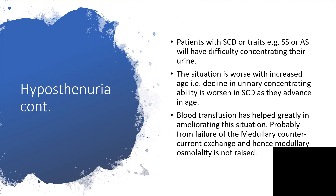Hyposthenuria is the inability to concentrate urine. Patients with sickle cell disease, or even those who are not fully having the disease but are carriers — otherwise known as traits — will all have difficulty concentrating their urine.